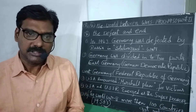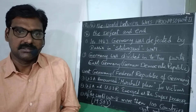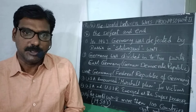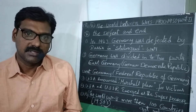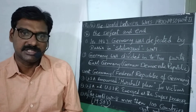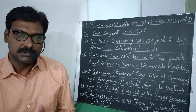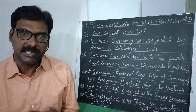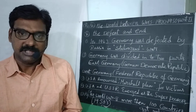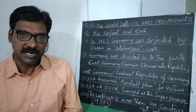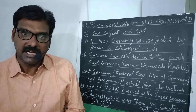During the Second World War, Germany attacked Russia in 1942 and the war continued between Germany and Russia. Finally in 1943, Germany was defeated by Russia in the Battle of Stalingrad.